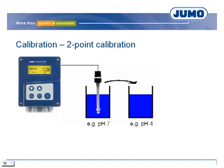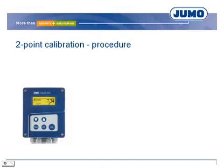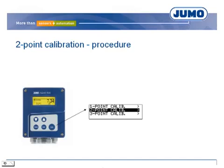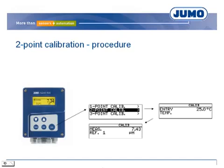For the two-point calibration, the buffer solutions must be placed in separate vessels and the electrode rinsed with distilled water. The combination electrode is put into the first buffer solution, for example pH 7, and two-point calibration is selected. When no temperature sensor is used, the temperature of the buffer solution must be measured and entered into the transmitter — this is especially important when the calibration point is far from pH 7. The transmitter shows the measured pH value, and the pH value for the current temperature, found on the bottle of buffer solution, must be entered into the transmitter.